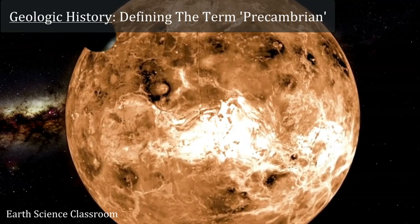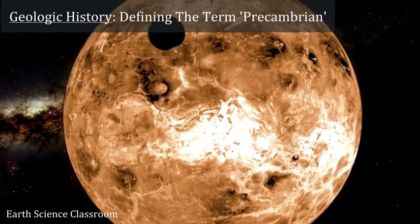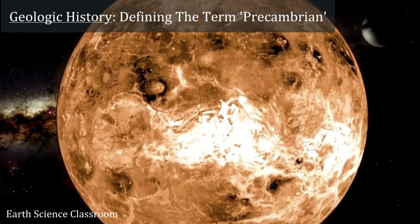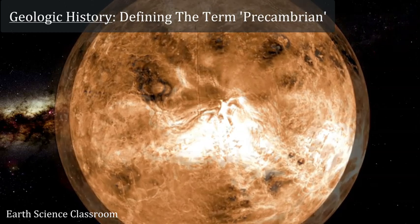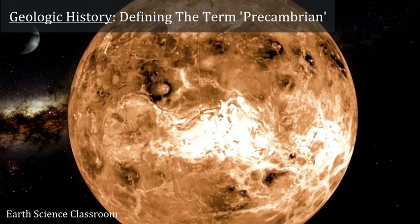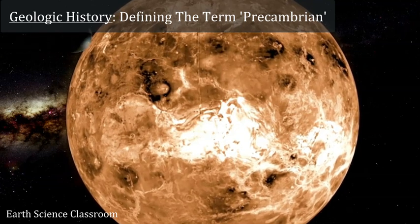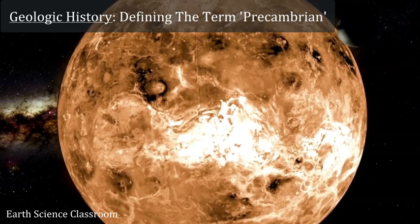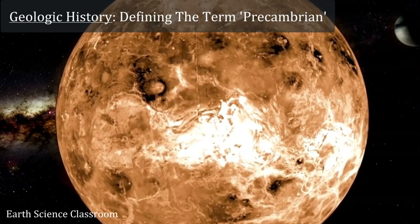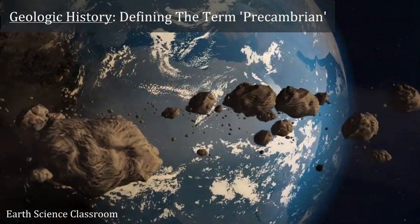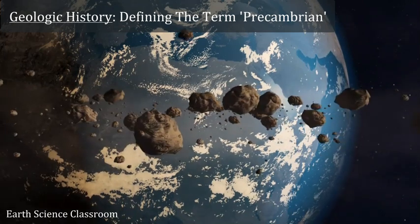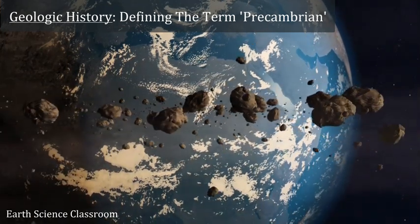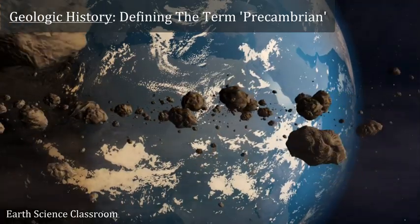This is the Earth Science Classroom. This video is looking at our planet's history — all 4.54 billion years — and examining a certain term we use in reference to the Earth's history: Precambrian. Where this word comes from, how we use it, and why we use it is detailed in this video.